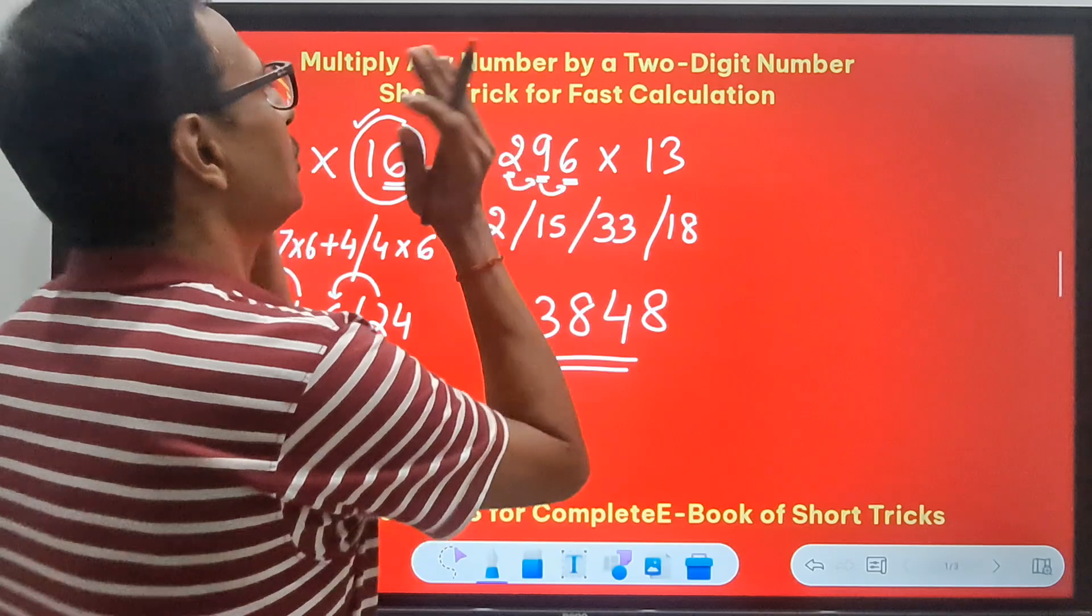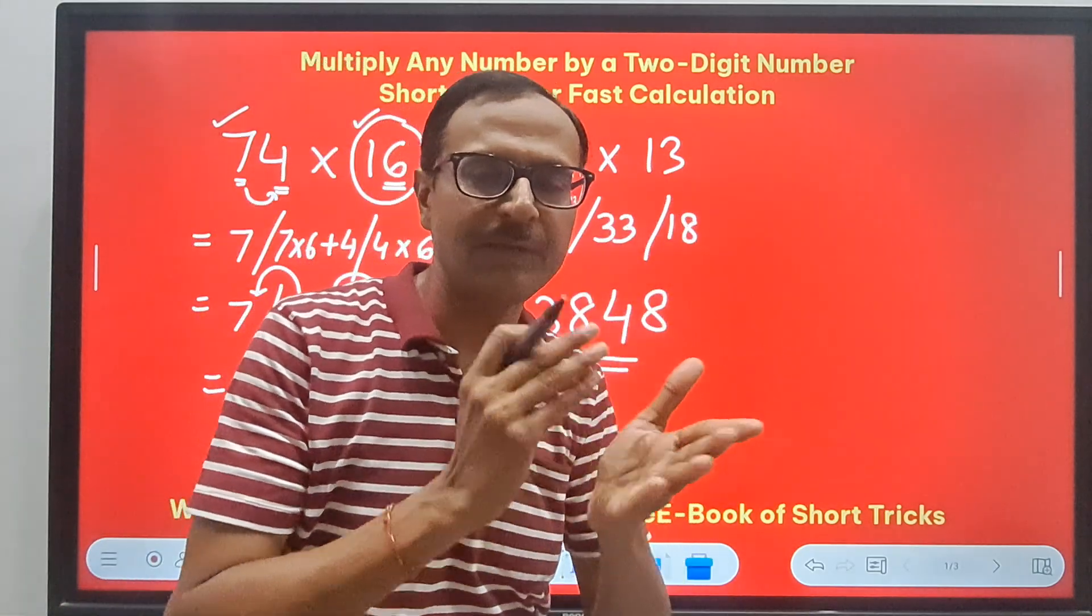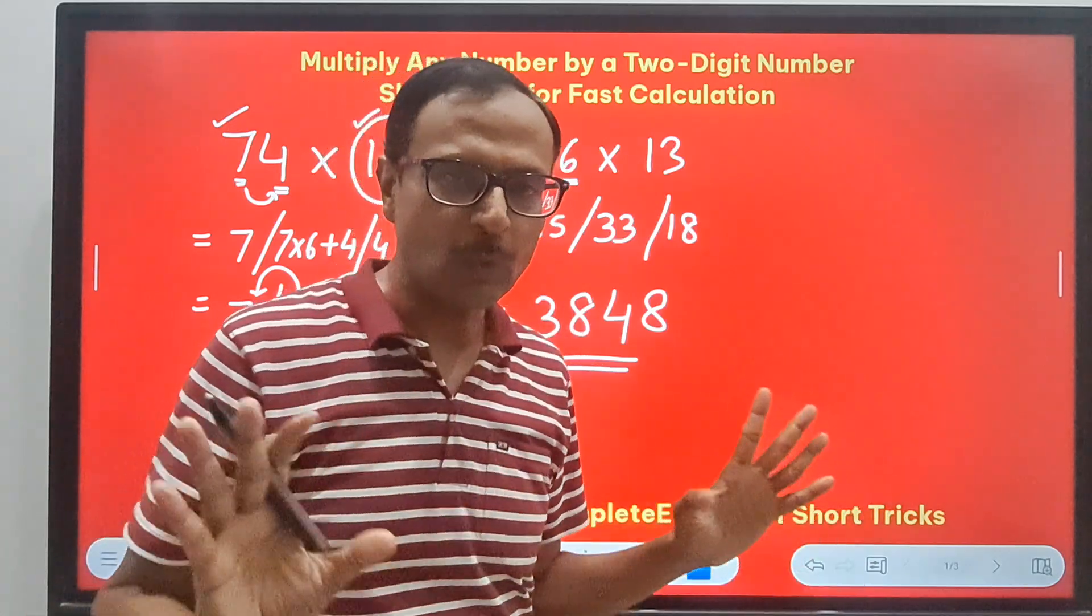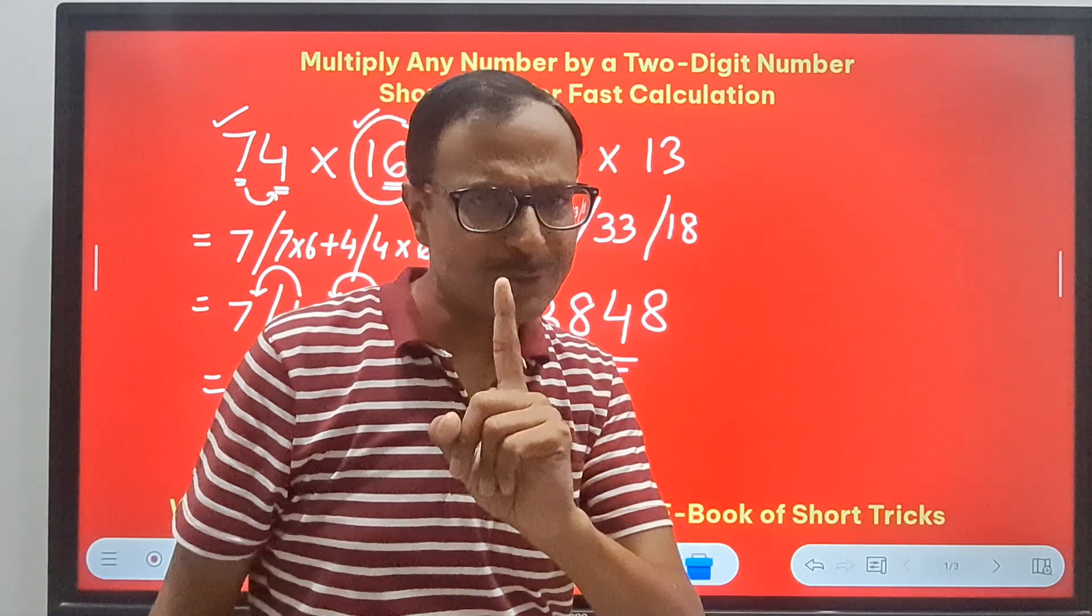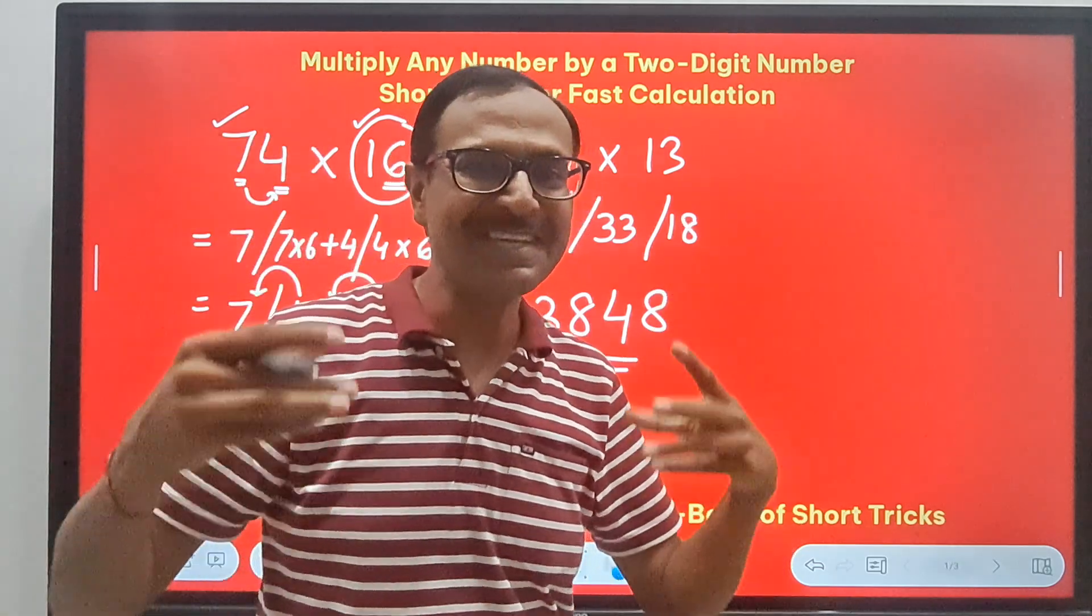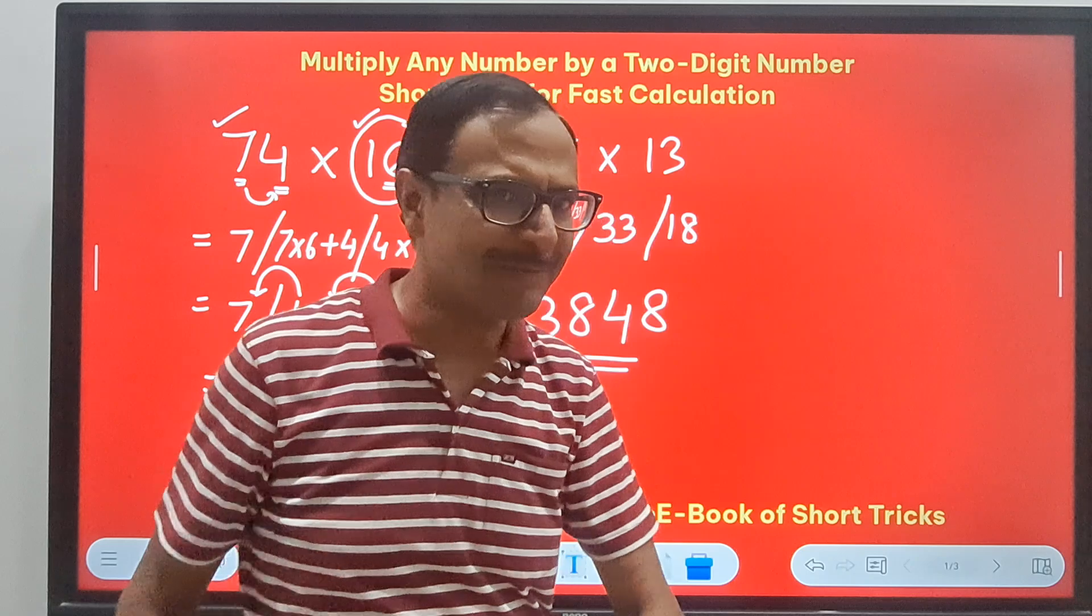Now start writing: 8, 1 carry 34 means 4, 3 carry 18 means 8, 1 carry 3, and you have your answer 3848. Very easy, right? And I think you can take big numbers here and multiply it by any number from 11 to 19, and you will get your answer for this particular type of question.